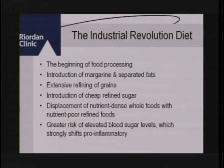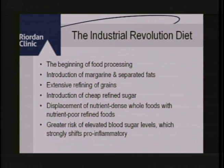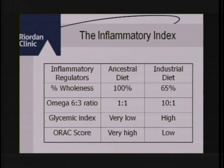The Industrial Revolution brought extensive food processing — introducing margarines, separated fats, refined white flour, cheap white sugar — what I call the white plague. Nutrient-dense whole foods were displaced by nutrient-poor refined foods. The percent wholeness dropped to about 65%, the omega-6-to-3 ratio rose to 10-to-1, the glycemic index became high, and the ORAC score declined as we processed out those wonderful colorful phytonutrients. The modern diet was becoming blander, whiter, and less nutrient-dense.